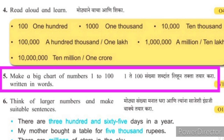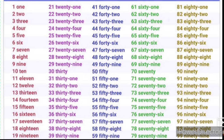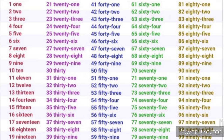Now Instruction number 5: Make a big chart of numbers 1 to 100 written in words. Ek te shambar sankhya shabdaat lihun takta tayar kara. Look at this chart — ya taktakade paha. Numbers are given here both in figures and in words.